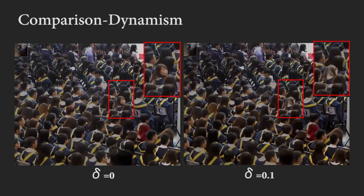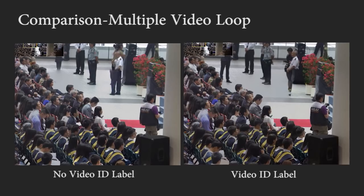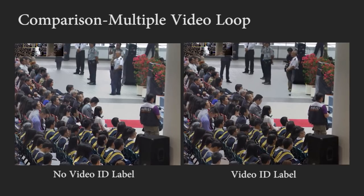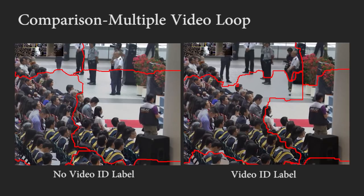Note that a motion consistency term is required in order to prevent the highlighted subject from being split in half. By adjusting the degree of dynamism, we can produce scenes that are either more or less lively. By using video ID labels, we reduce video tile boundary discontinuities in the final panorama.